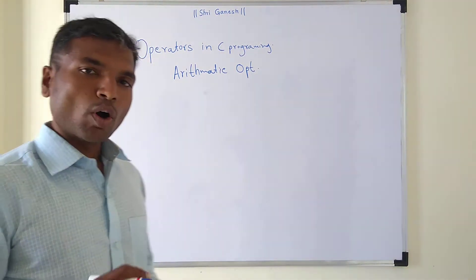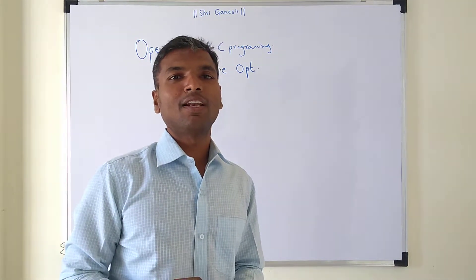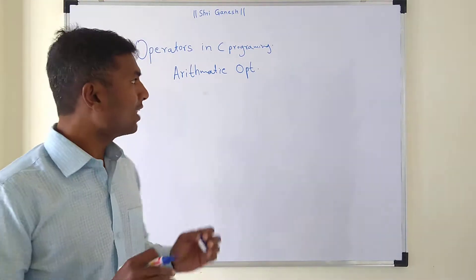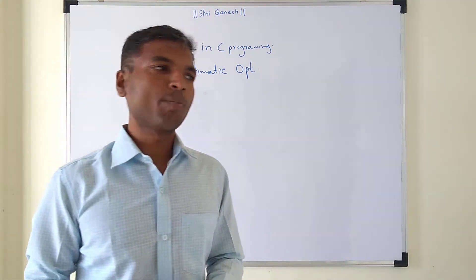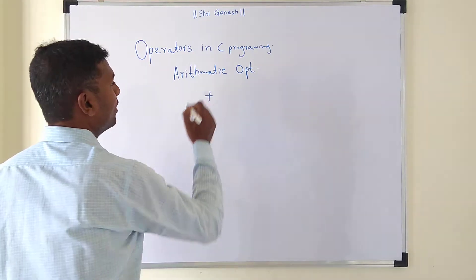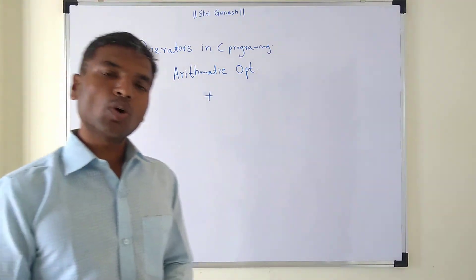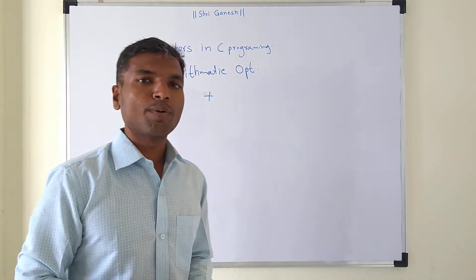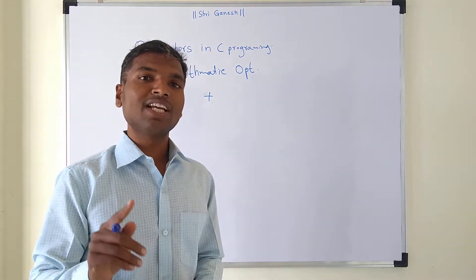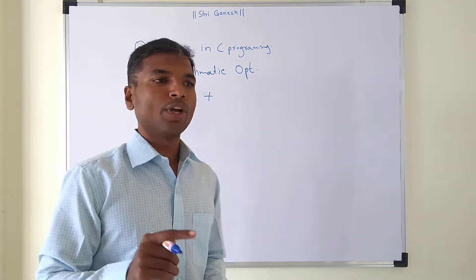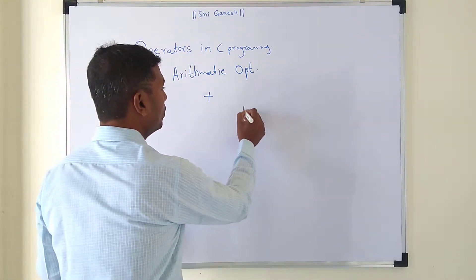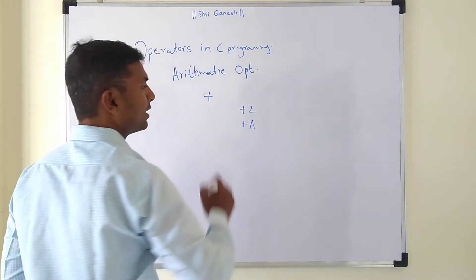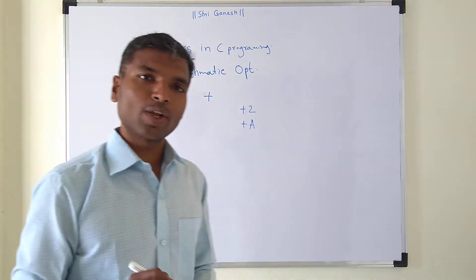Normally these operators are useful to perform the mathematical or logical functions in C programming language. In the arithmetic operator, the first major operator is called the plus operator. This operator is also called a unary operator. Why is it called a unary operator? Because the plus operator can be used with a single operand. So if you want to write plus 2, you can write plus a. That is why it is called a unary operator.